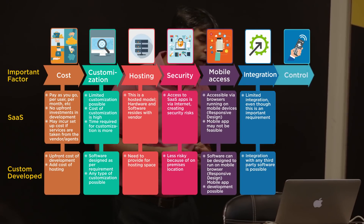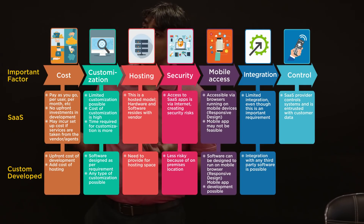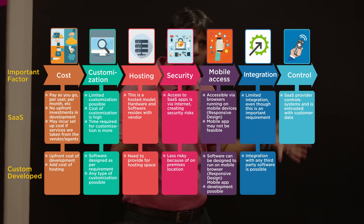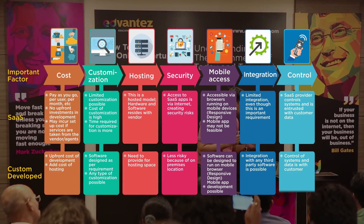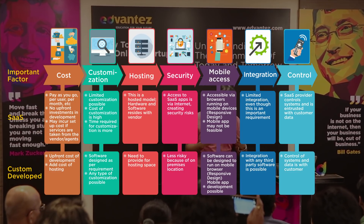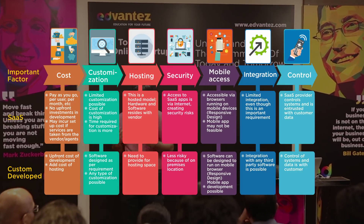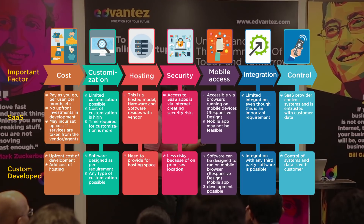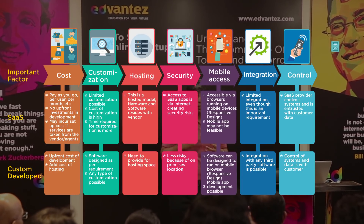Control: SaaS has a lot of controls already built in, so you're only able to control your own web store and very few functions and features. On the other side, control of system and data is with the customer in custom development. SaaS data is also on their servers, so you can't get to the data.